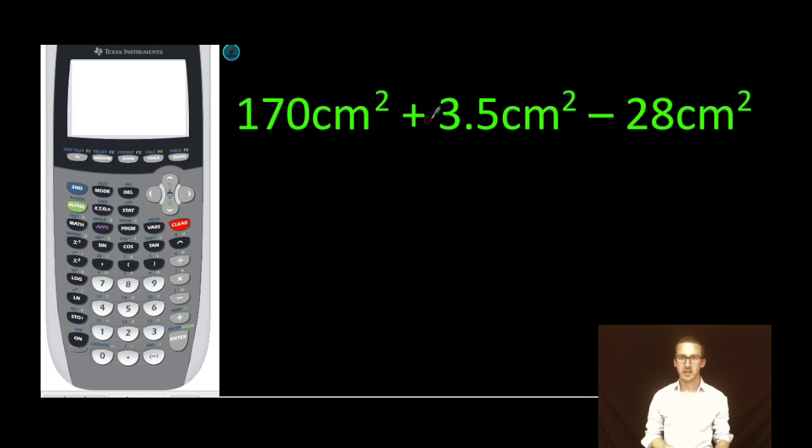Okay in this example we've got some addition and subtraction but the rule is the same. Our final answer has to match the measurement that is least precise. As I look at this my first measurement is only precise to the tens place. And I know it's only to the tens place because there's no decimal here.